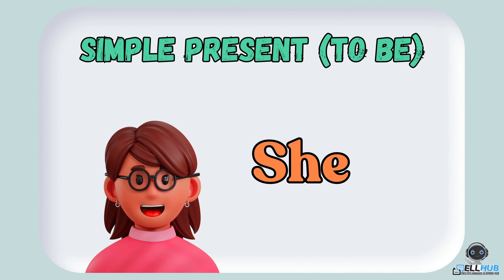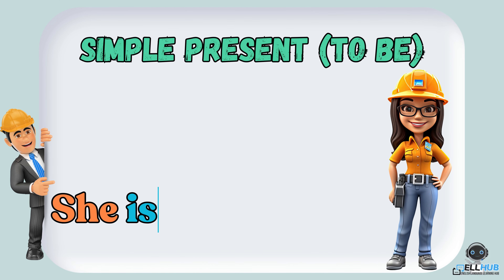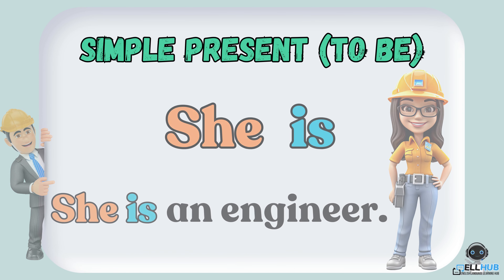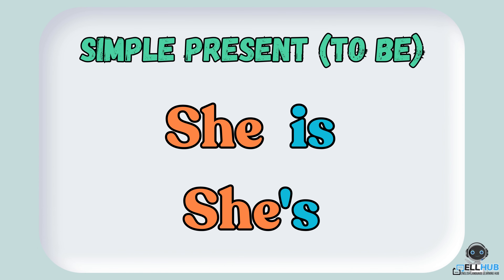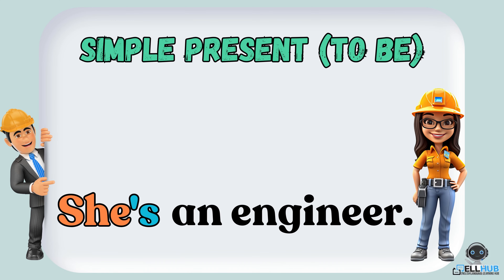We use is with she. For example: she is an engineer. In everyday conversation, we often use the contraction she's, like she's an engineer.